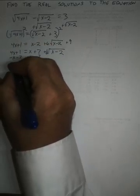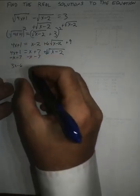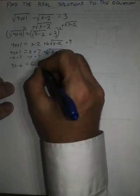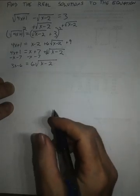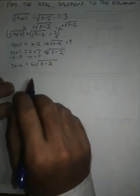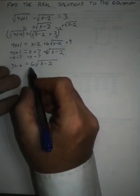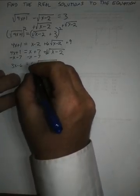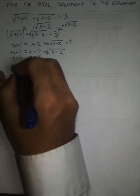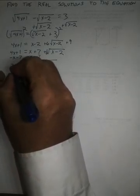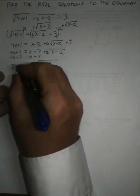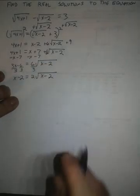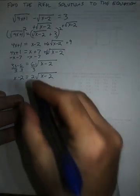And I get 3x minus 6 is equal to 6 principal square root x minus 2. And rather than dividing everything by 6 and having a bunch of fractions to deal with, at this point, I'm just going to divide by the common factor of 3 and get x minus 2 is equal to 2 principal square root of x minus 2.